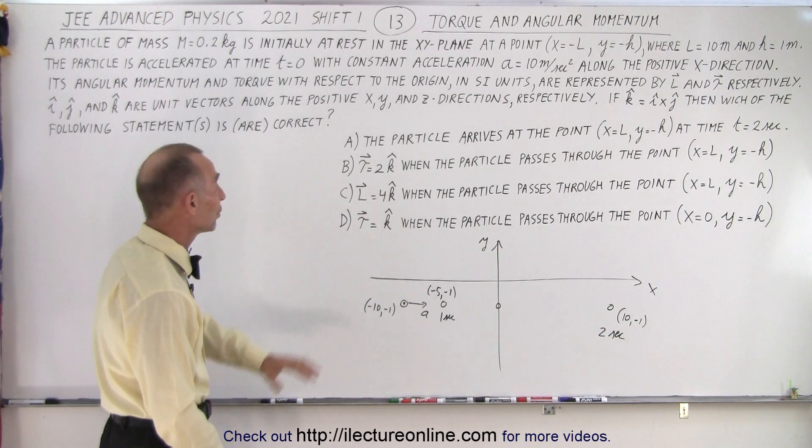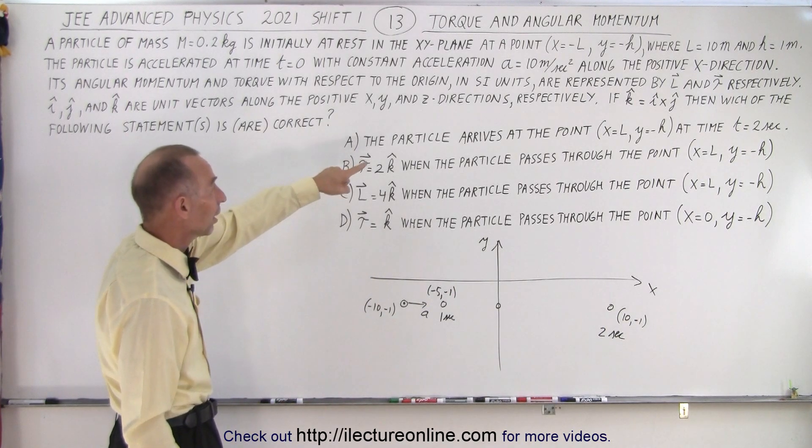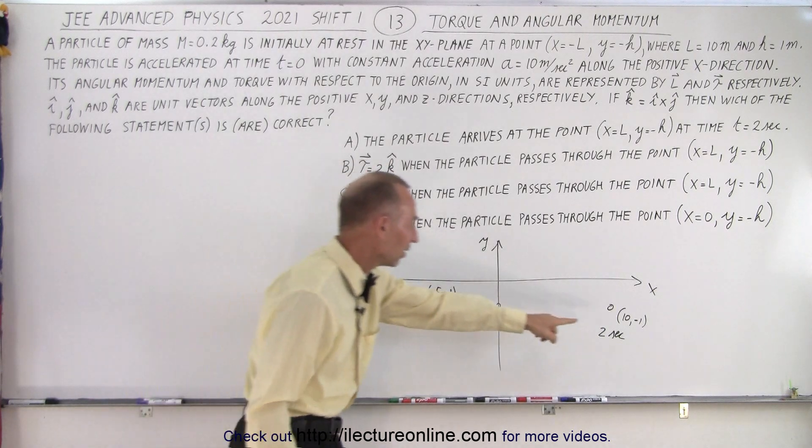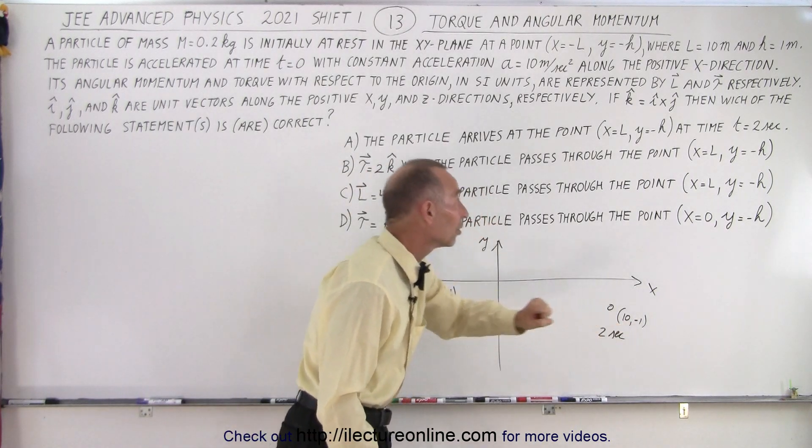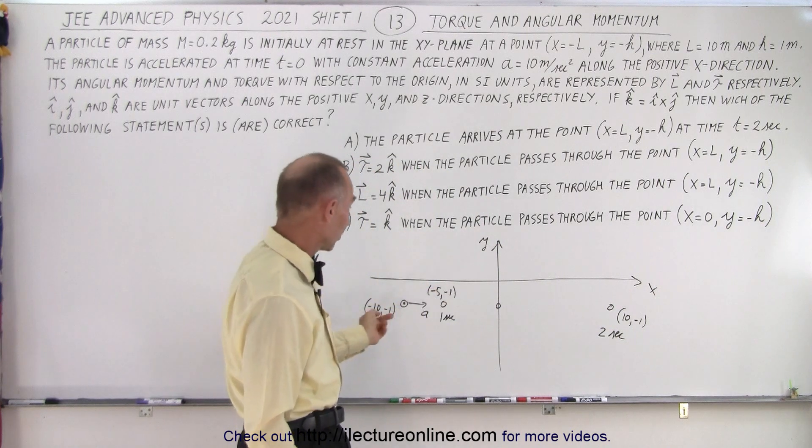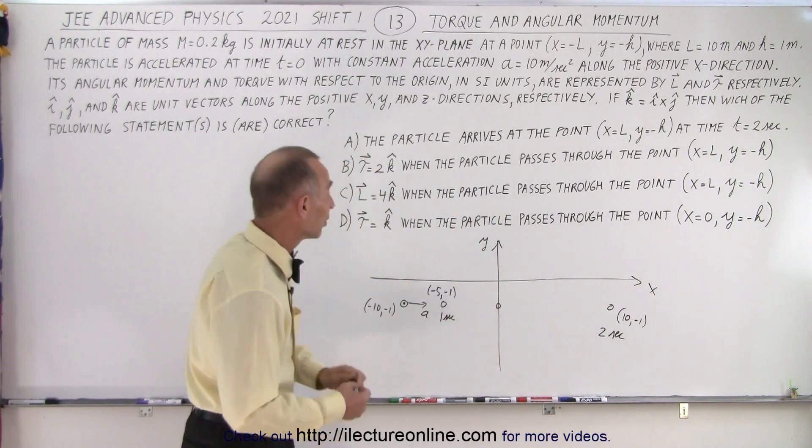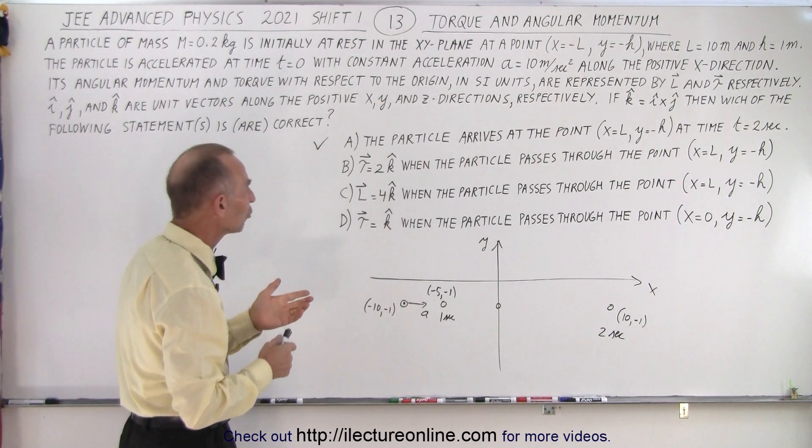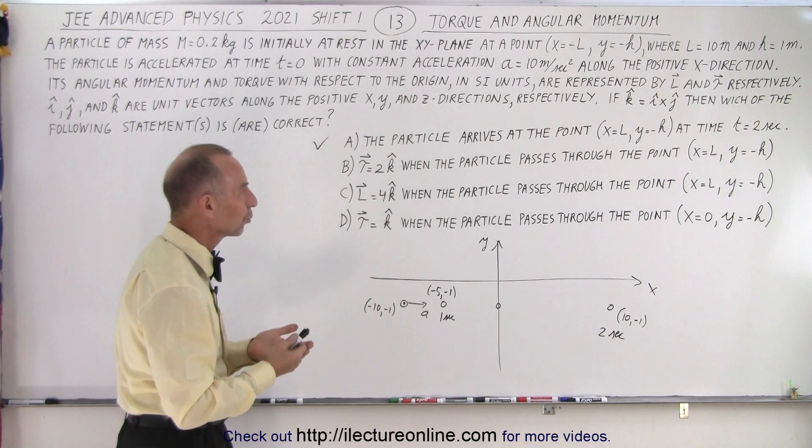All right, so now you only have about a minute or so left. So what can we do about these four angles? The particle arrives at the point x equals l, y equals minus h, which is right here l minus h, at two seconds. That's correct, so we know that a is correct.